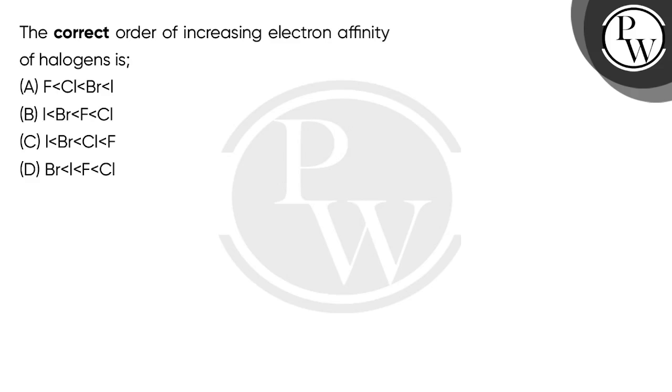Hello students, let's see this question. The question says the correct order of increasing electron affinity of halogens is, and four options are given. You have to arrange the halogens in increasing order of electron affinity. Halogens come in group number 17.